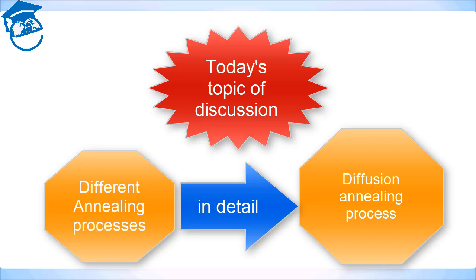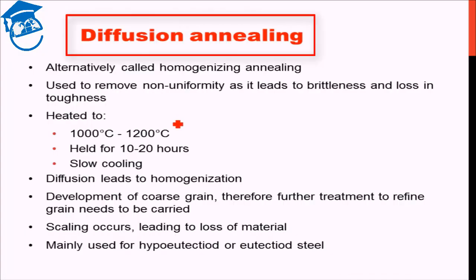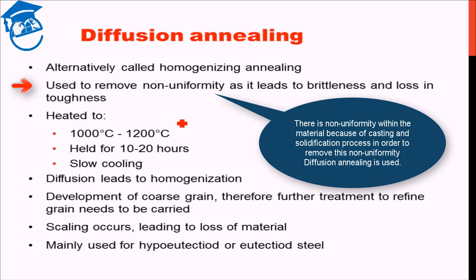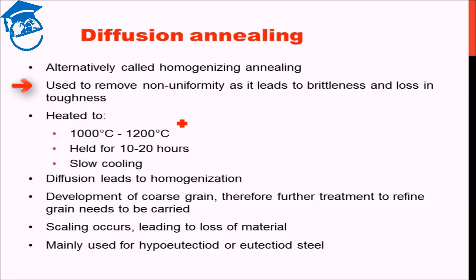To begin with, let's discuss about the diffusion annealing process. Diffusion annealing is alternatively known as the homogenizing annealing process. The basic idea behind diffusion annealing is that there is non-uniformity within the material inherently during casting or solidification processes. In order to remove those non-uniformities, if we provide a high enough temperature such that diffusion is fast enough, then the non-uniformity can be removed and homogenization can take place.